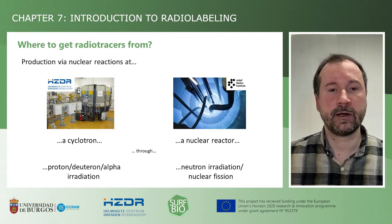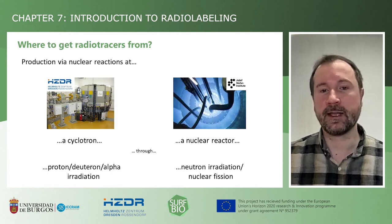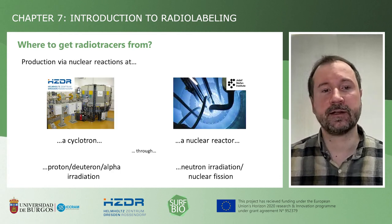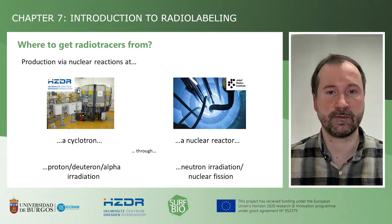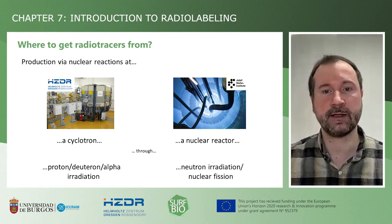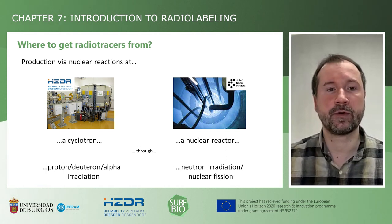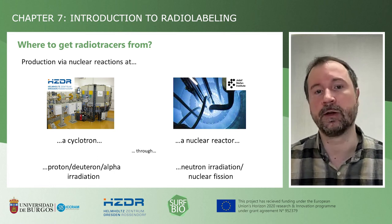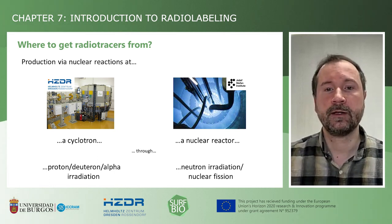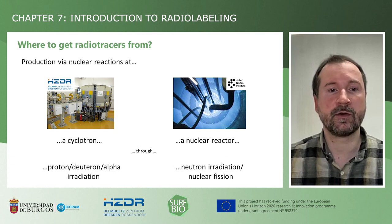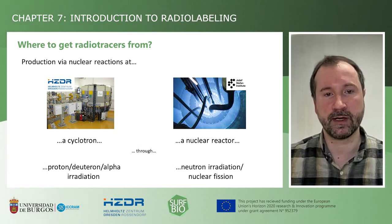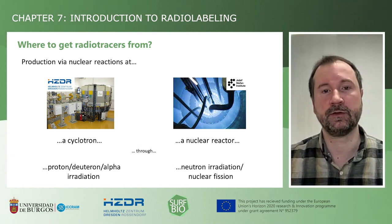Now that we know what they are, where do we get them from? Radiotracers are typically produced via nuclear reactions using either a cyclotron — a small particle accelerator that can accelerate protons, deuterons, or alpha particles — or a nuclear reactor. Radiotracers can be produced via irradiations or isolated from the fission products in the case of the nuclear reactor.